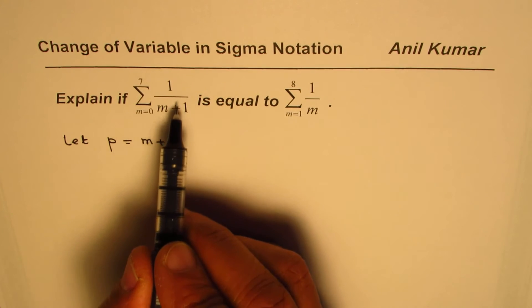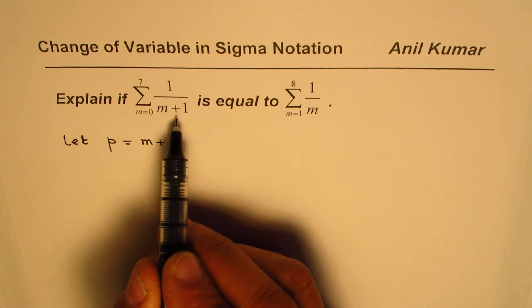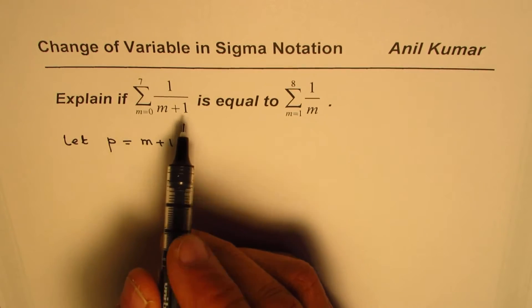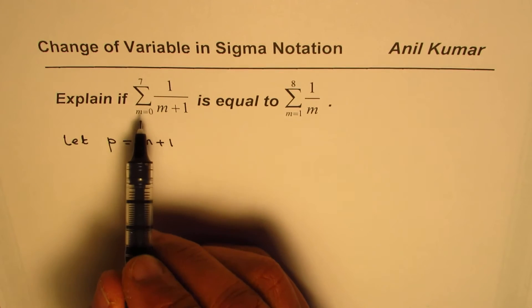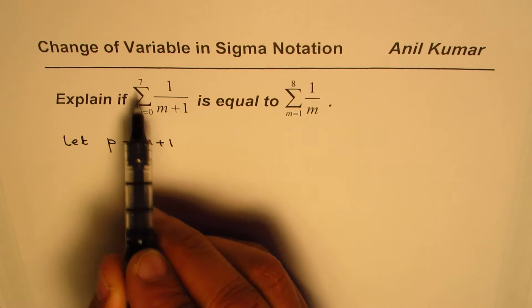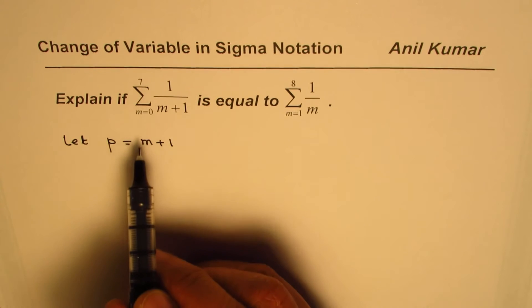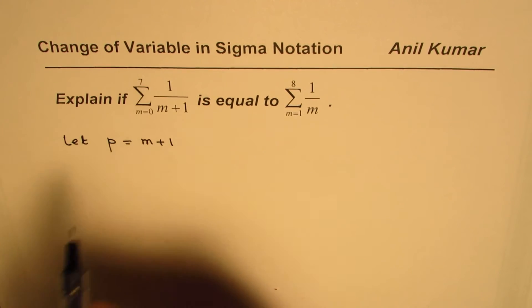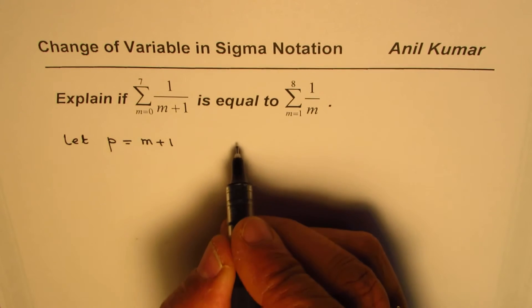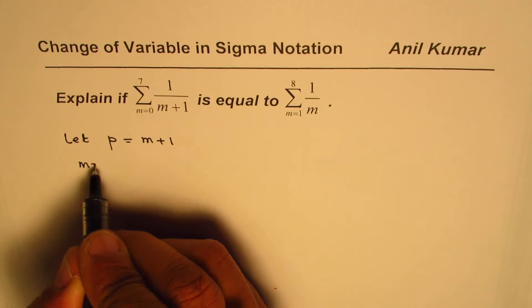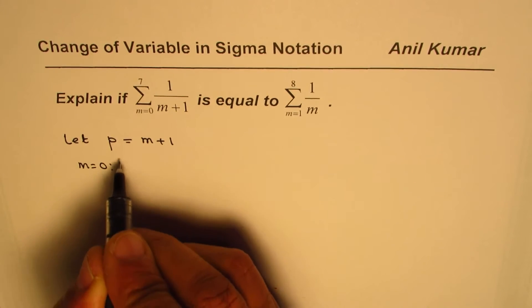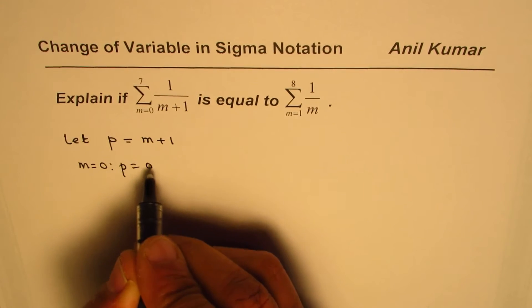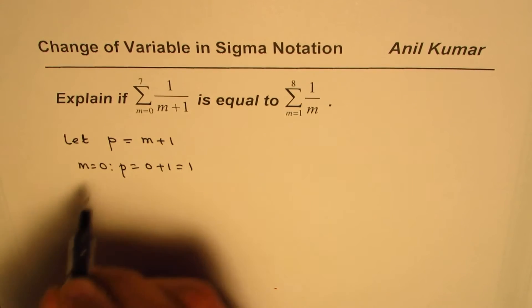Now if I change m plus 1 to p, in that case the lower and upper bounds of summation should also change. Let's check what it should be. If m equals 0, then what is the value of p? Let me substitute 0 here. 0 plus 1, p should be 1.